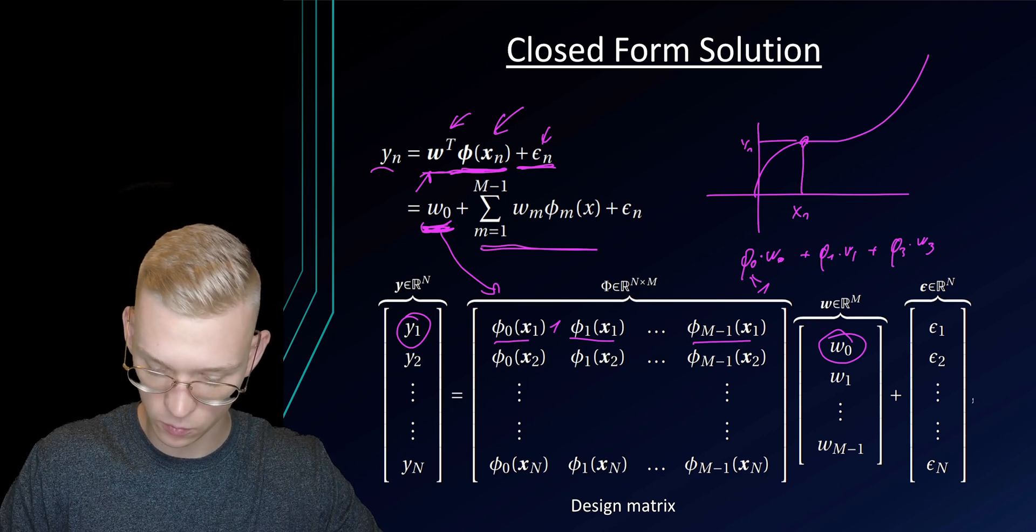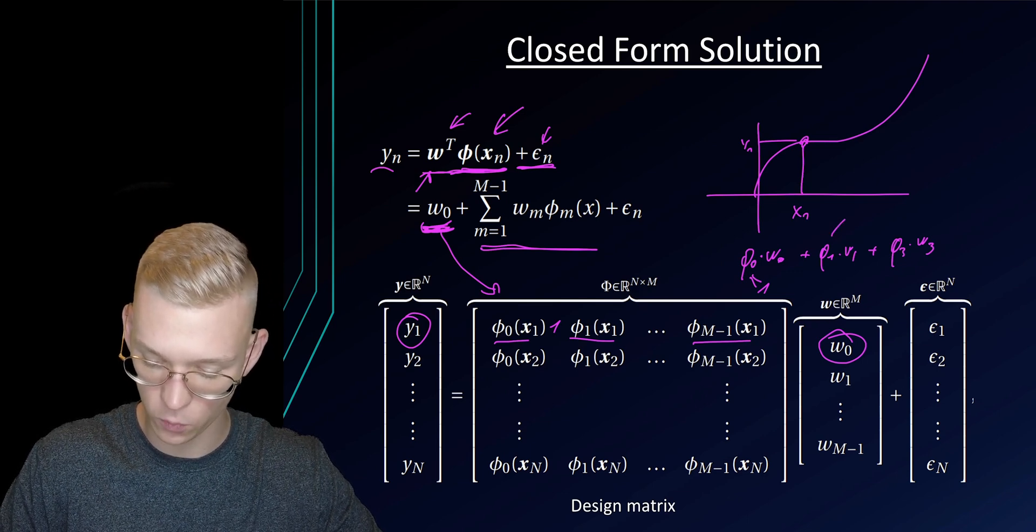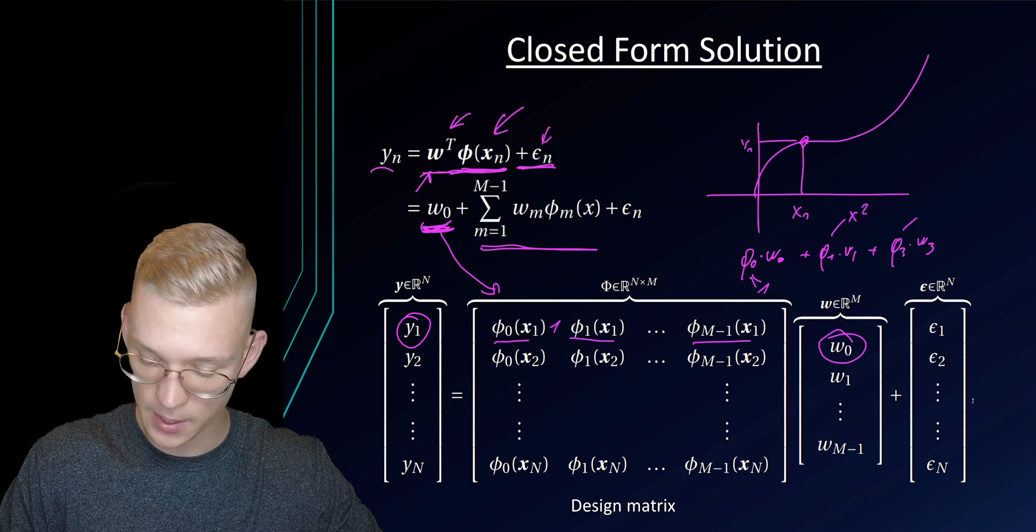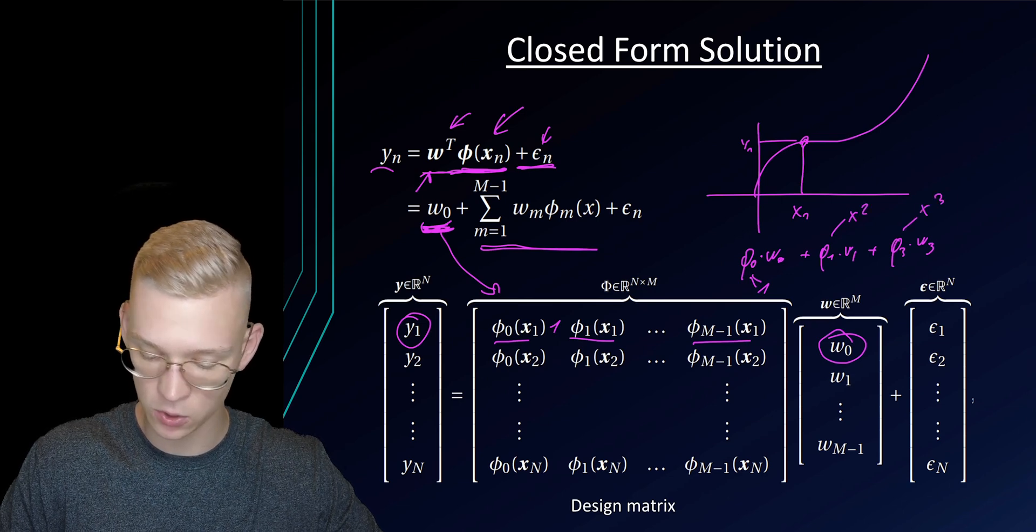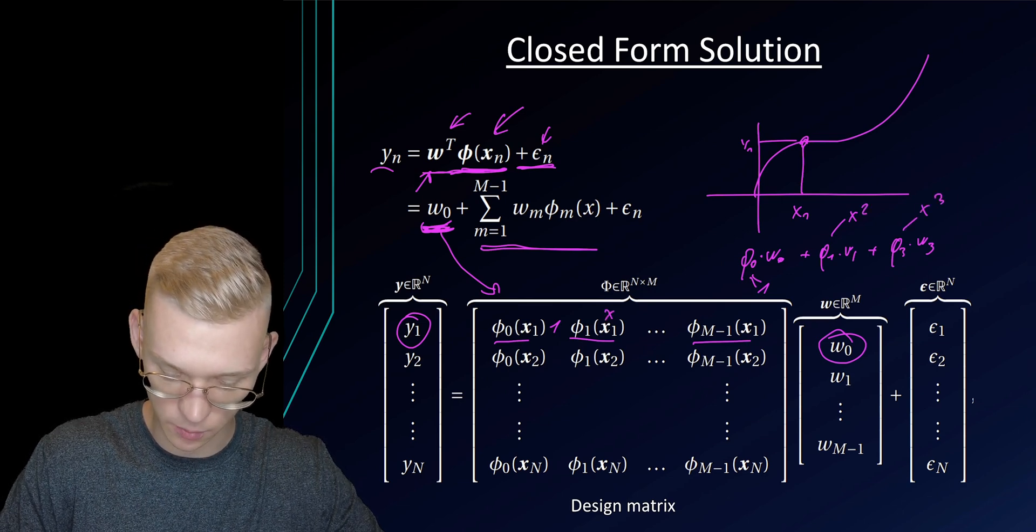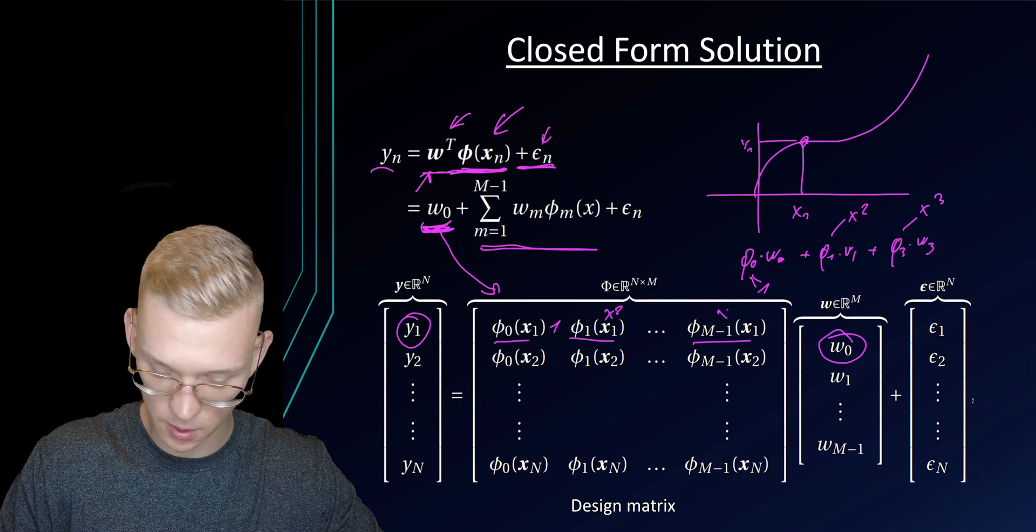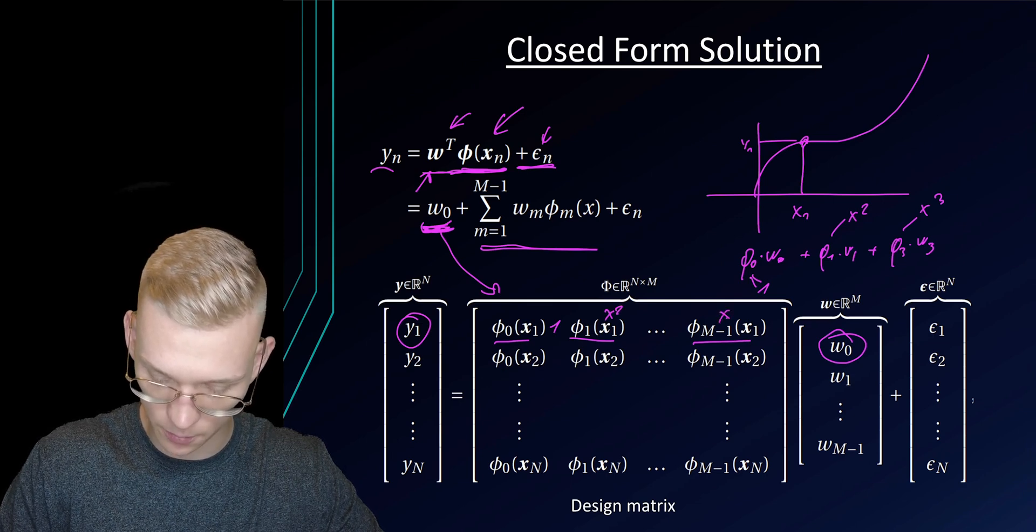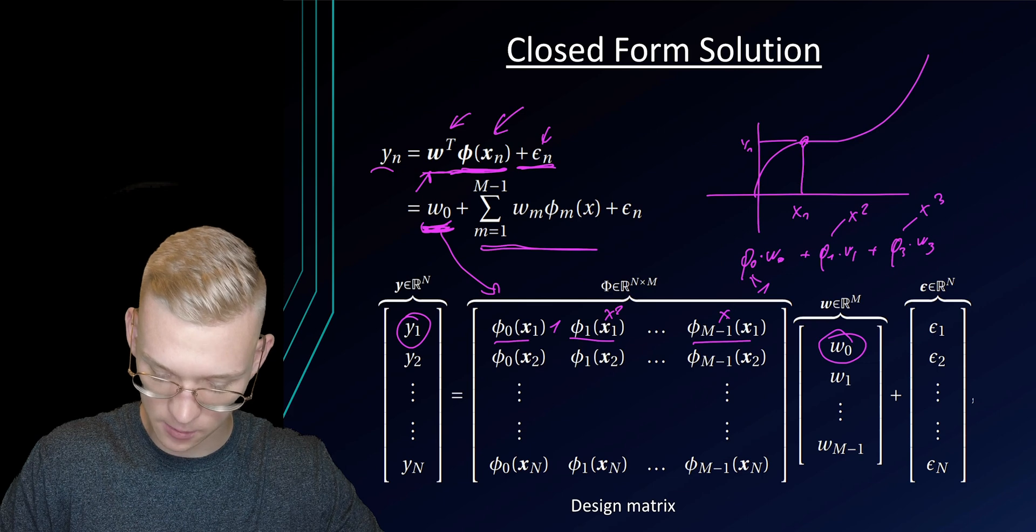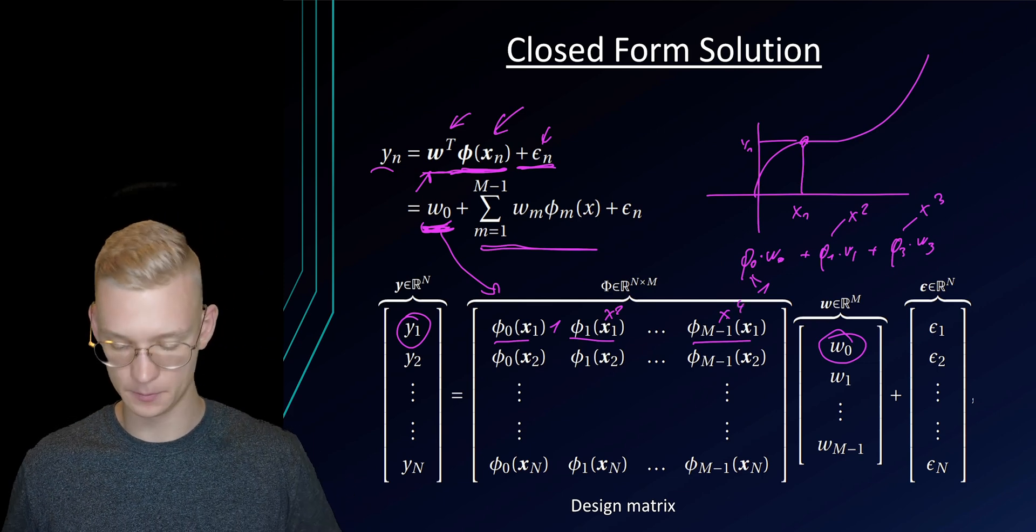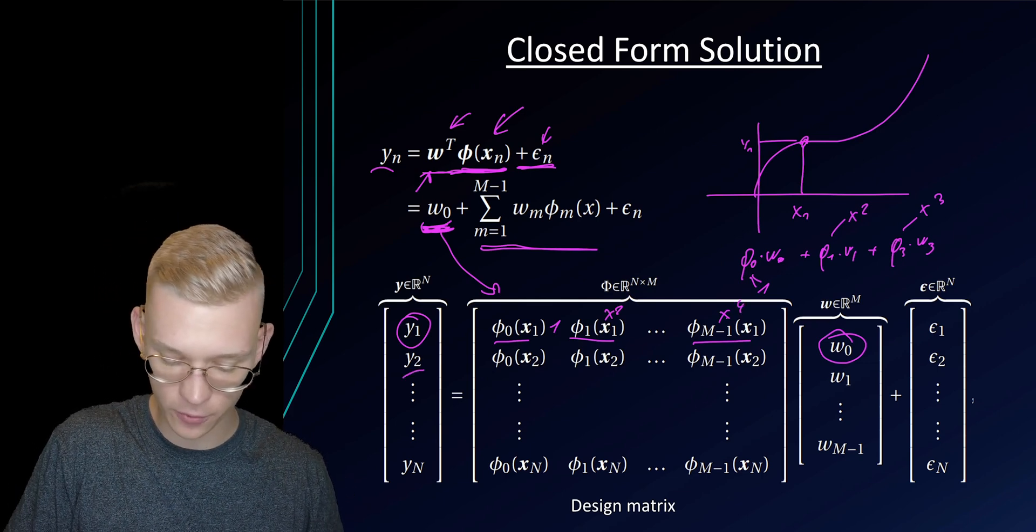Now we have whatever function you want for phi 1. This could be, for example, x squared and this can be, for example, x cubed. So this is 1, this will be x squared, and so forth, and we'll go up to, for example, x to the power of 4. And we do this for every observation. We have a 1 everywhere.